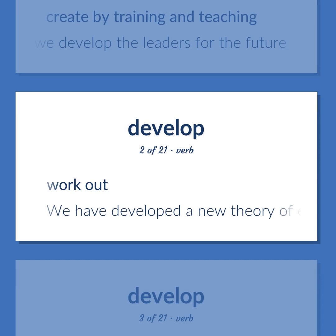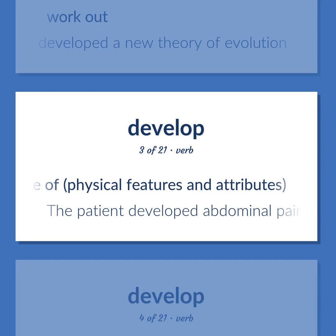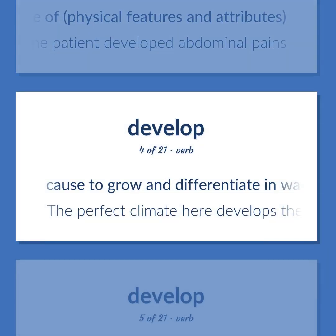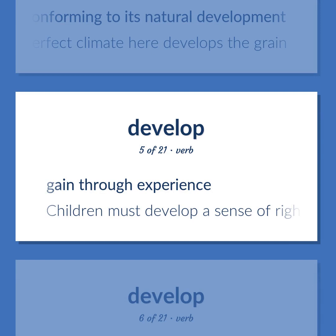Work out. We have developed a new theory of evolution. Come to have or undergo a change of physical features and attributes. The patient developed abdominal pains. Cause to grow and differentiate in ways conforming to its natural development. The perfect climate here develops the grain. Gain through experience. Children must develop a sense of right and wrong.